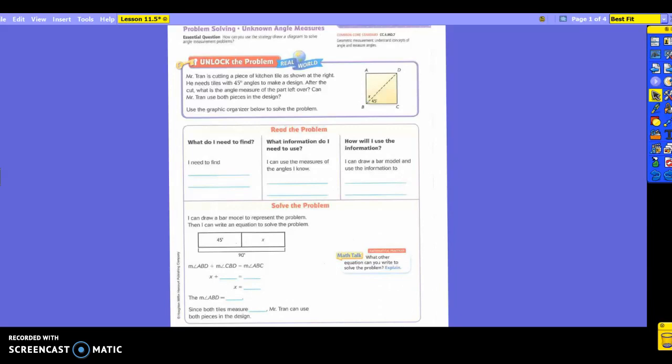Let's read the problem they gave us. Mr. Tran is cutting a piece of kitchen tile as shown at the right. He needs tiles with 45 degree angles to make a design. After the cut, what is the angle measure of the part left over? Can Mr. Tran use both pieces in the design? Grab your highlighter, because as always there are a couple of questions he's asking of us.